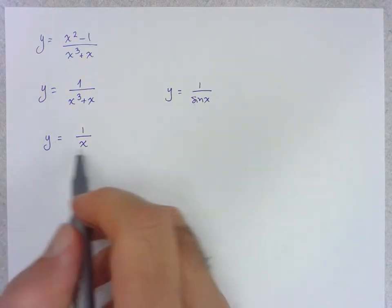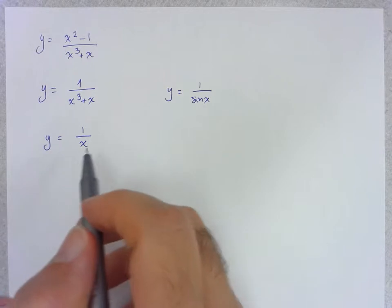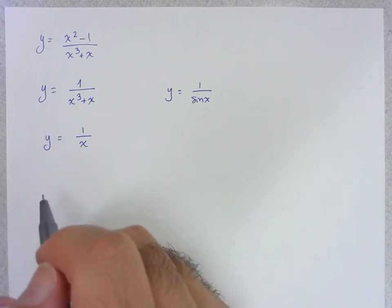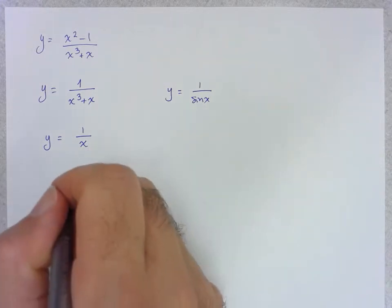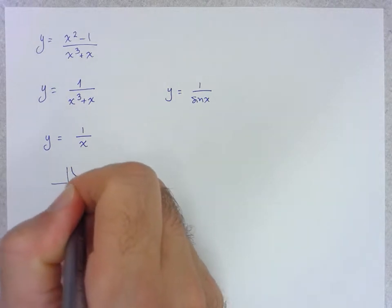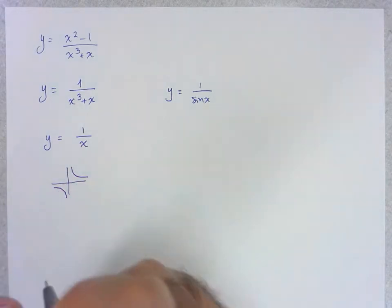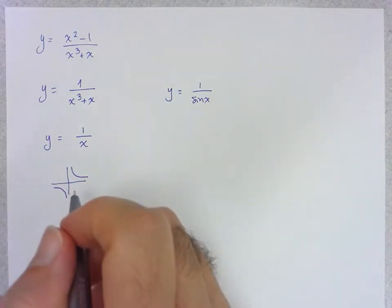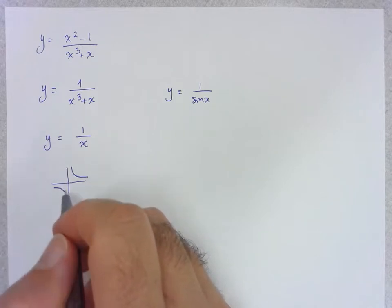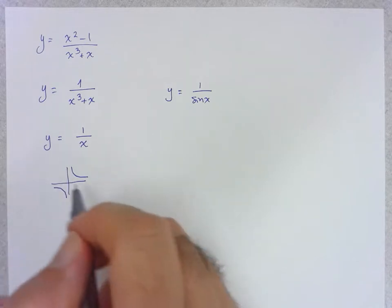So you would have studied this last year as its own function. You might have done some tables of values and you would have figured out what the graph of this function looks like. And you realize that this function has asymptotes both the vertical one and a horizontal one. You would have determined some nice points.